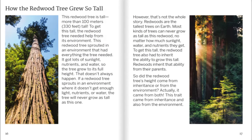How the redwood tree grew so tall. This redwood tree is tall — more than 100 meters, or 330 feet tall. To get this tall, the redwood tree needed help from its environment. This redwood tree sprouted in an environment that had everything the tree needed: lots of sunlight, nutrients, and water. So the tree grew to its full height. That doesn't always happen — if a redwood tree sprouts in an environment where it doesn't get enough light, nutrients, or water, the tree will never grow as tall as this one. However, that's not the whole story.